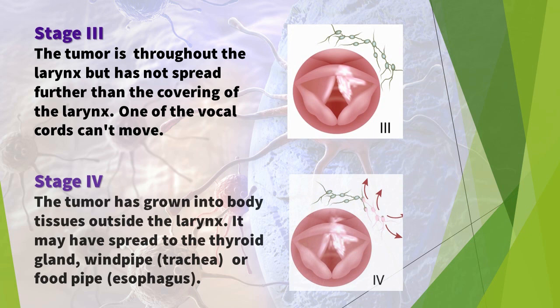Stage 4: the tumor has grown into body tissues outside the larynx. It may have spread to the thyroid gland, windpipe (trachea), or food pipe (esophagus). There is cancer in more than one lymph node, and one lymph node containing cancer is larger than six centimeters across.